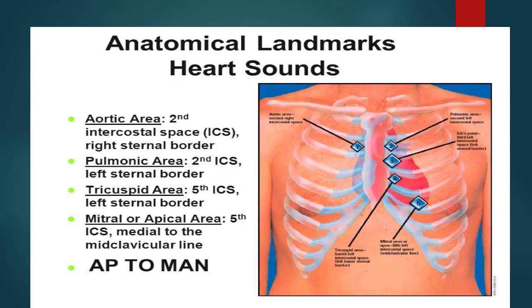To remember these landmarks, we use the mnemonic: A-P-T-M-E — where A is Aortic, P is Pulmonary, T is Tricuspid, M is Mitral (apical), and E is ERB's area.